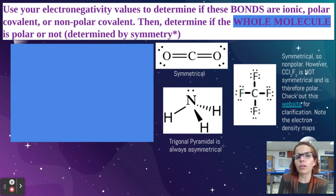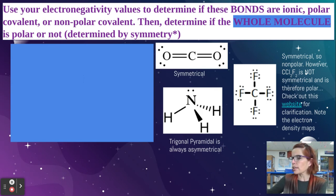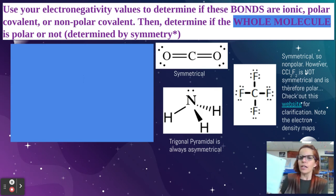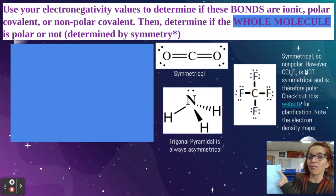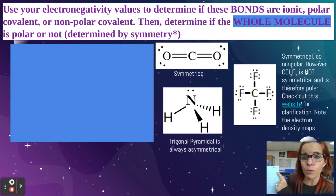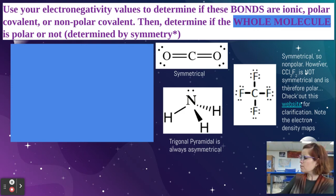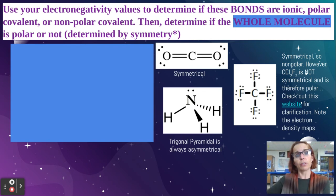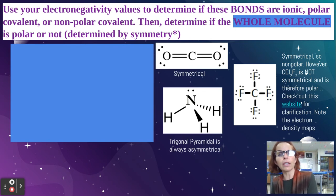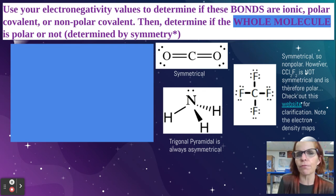Then I can do the same thing with carbon and fluorine. Carbon is 2.5. Fluorine is a really high one — it's 4.1. In fact, I think fluorine is the highest one on all of them. So the subtraction indicates that that one has a really, really big electronegativity difference compared to the others.